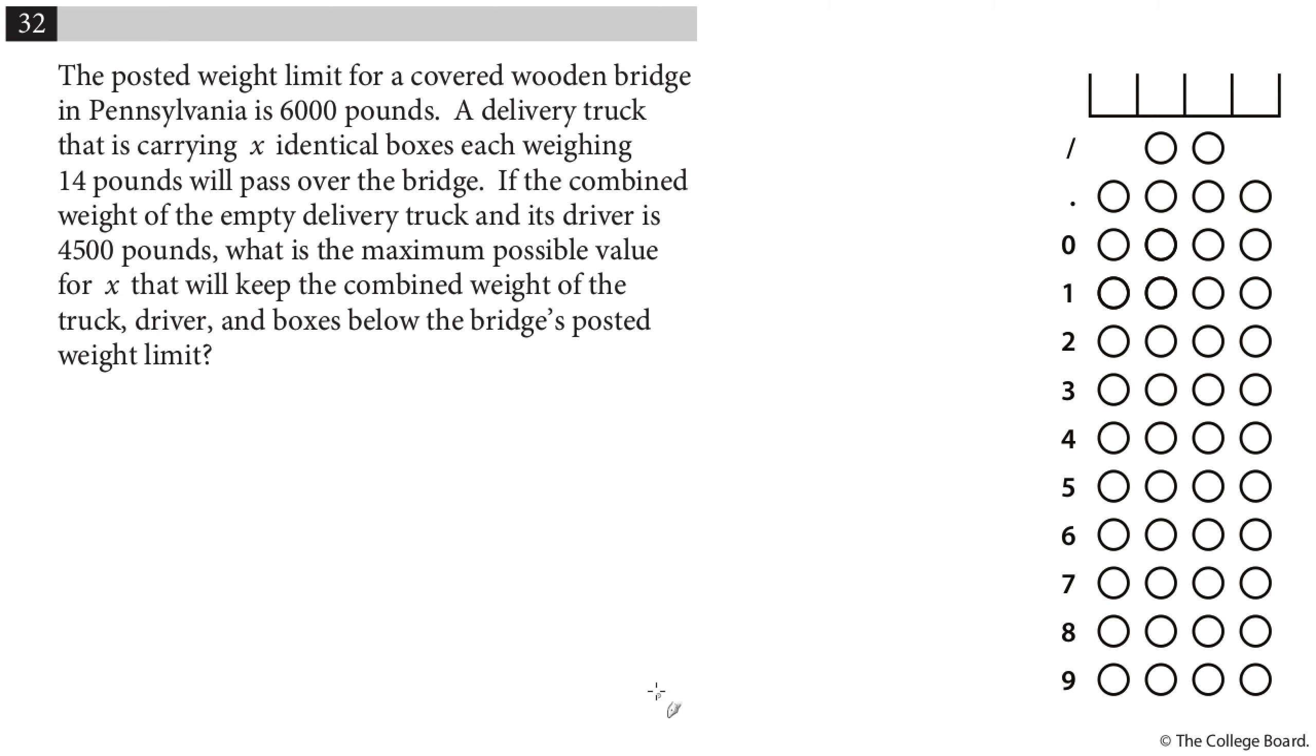Okay, give this problem a shot. Alright, so the posted weight limit for a covered wooden bridge in Pennsylvania is 6,000 pounds. A delivery truck is carrying X identical boxes, each weighing 14 pounds, will pass over the bridge. If the combined weight of the empty delivery truck and its driver is 4,500 pounds, what is the maximum possible value for X that will keep the combined weight of the truck, driver, and boxes below the bridge's posted weight limit?